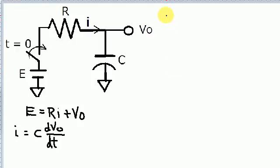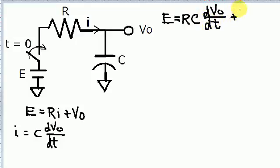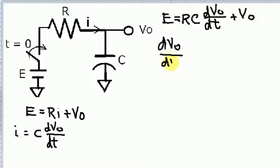So we have E equals RC times dV0 divided by dt plus V0. Now what I'd like to do is move the E term to the right side of the equation, then divide through by RC to normalize and use the standard form for a first-order differential equation. That gives us dV0/dt plus V0 divided by RC equals E divided by RC.